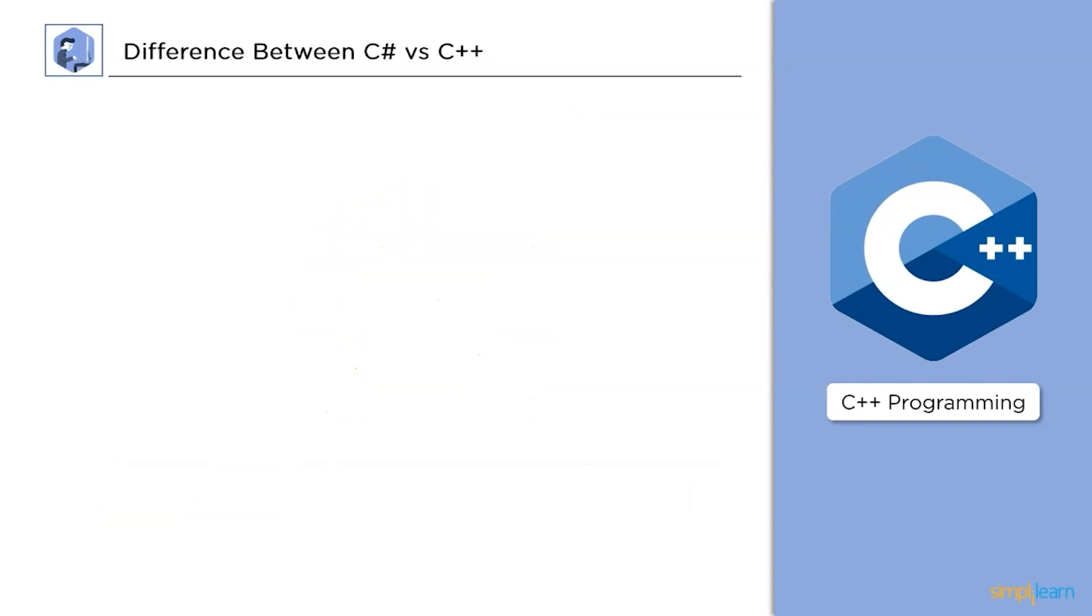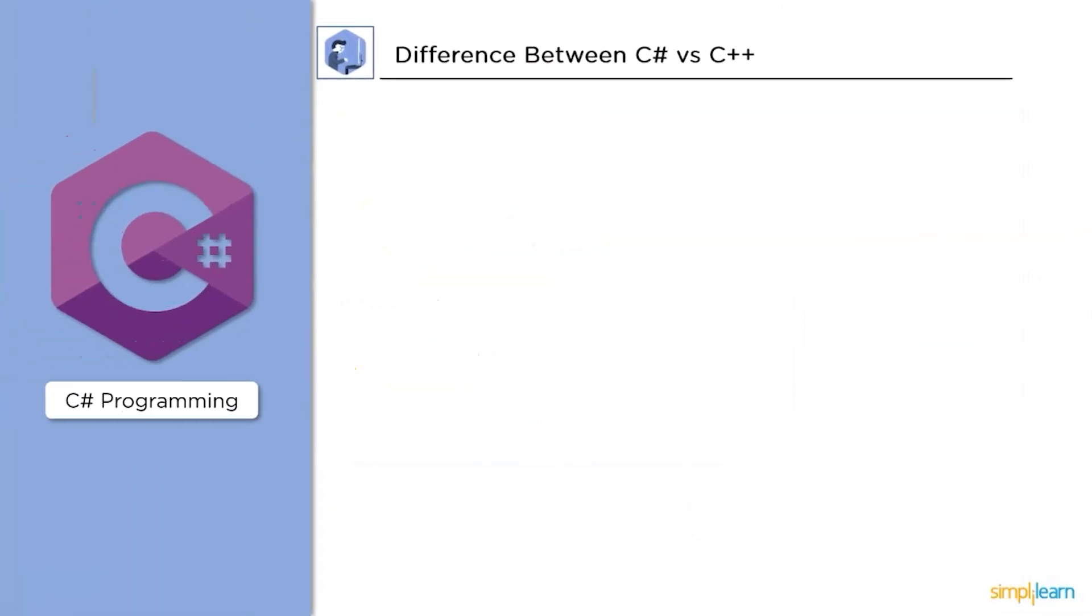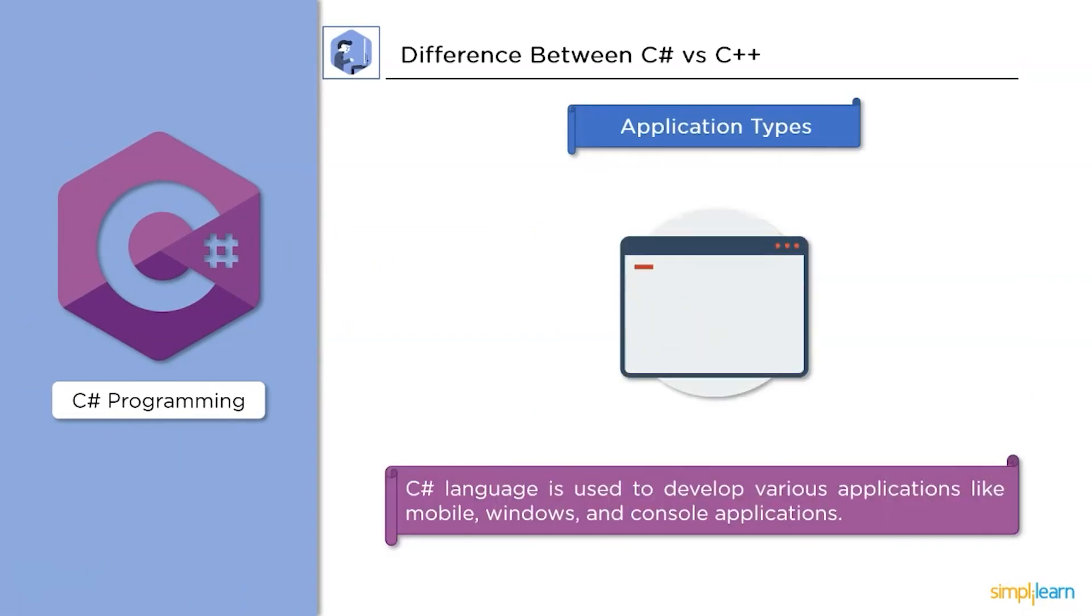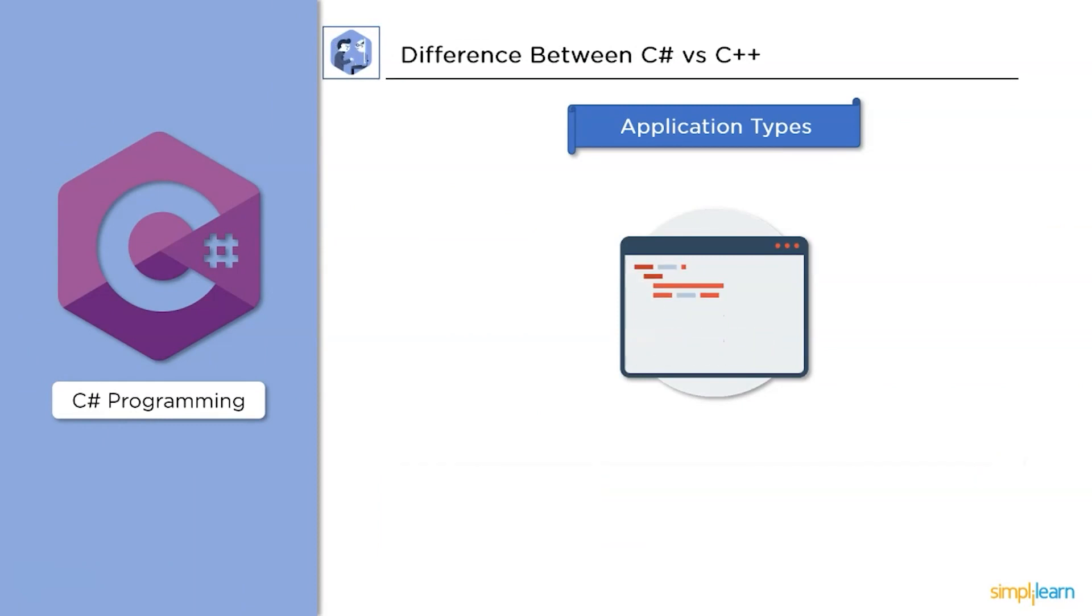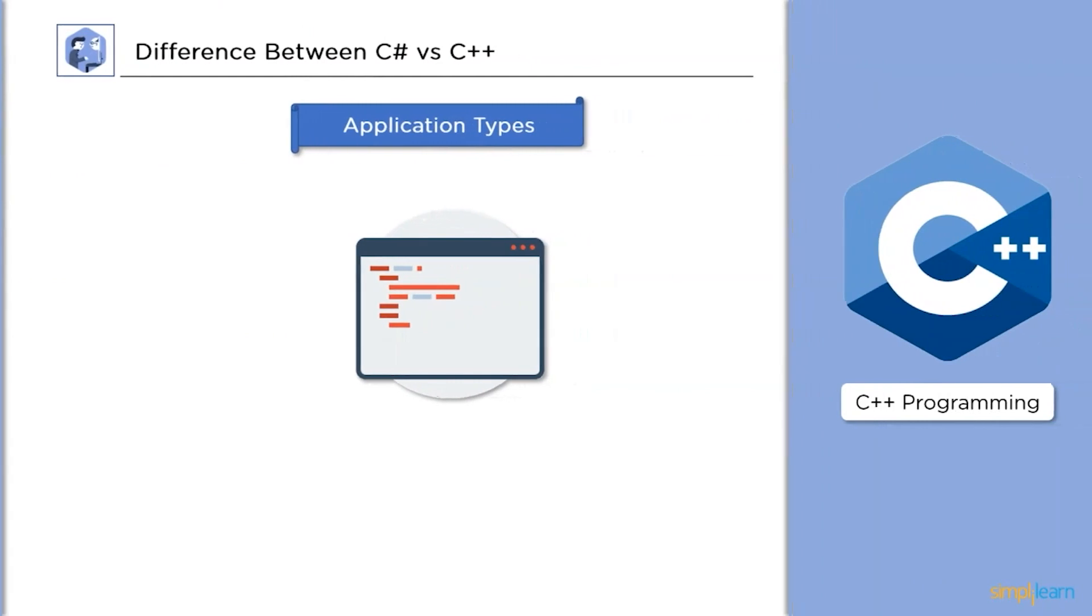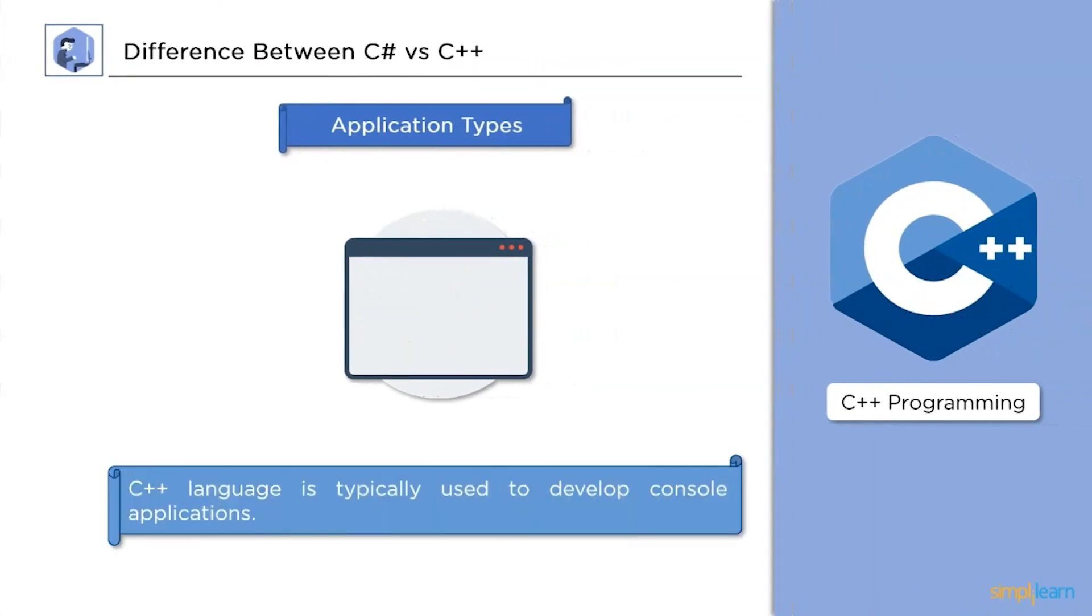Now, next, application type. C Sharp language is used to develop various applications like mobile, Windows, and console applications. On the other hand, C++ language is typically used to develop only console applications.